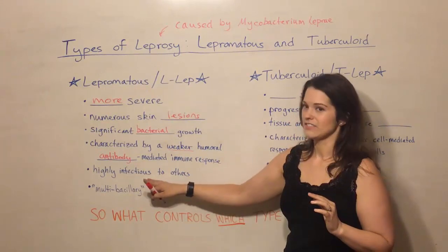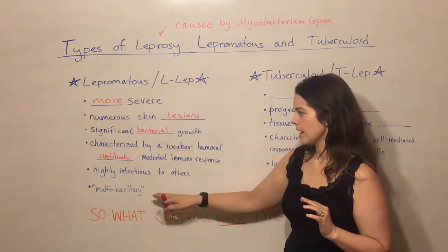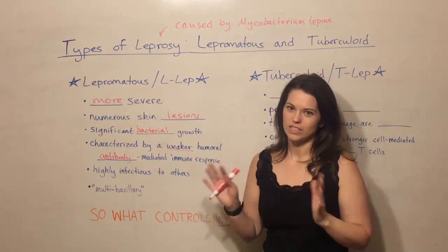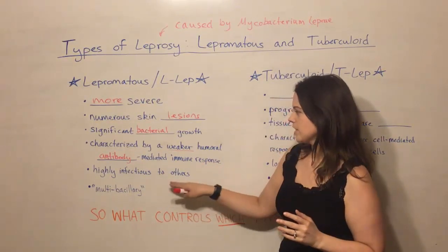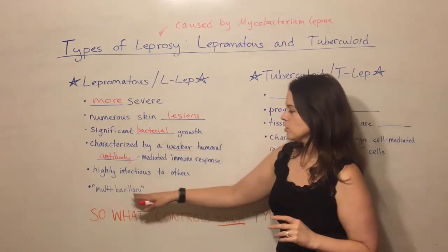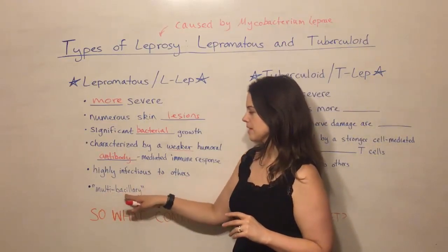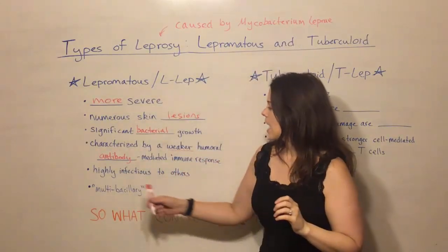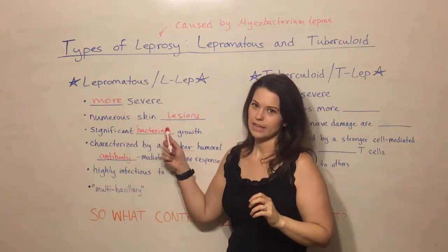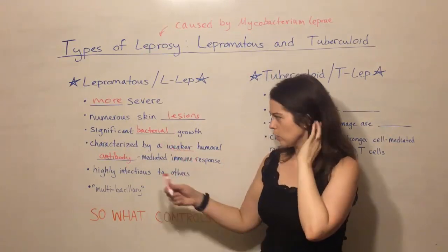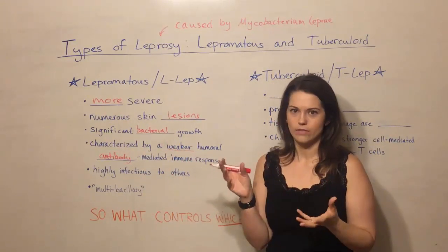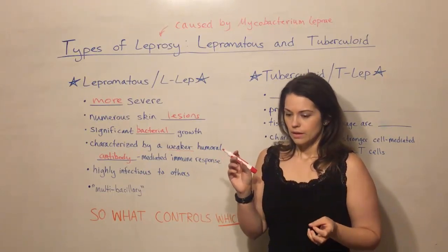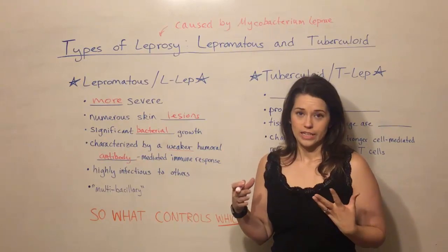L-LEP is also highly infectious to other people relative to the other kind. Leprosy overall is not actually that infectious, but this is the more infectious of the two. It's also sometimes called multi-bacillary — bacillary referring to bacillus, the rod shape of the mycobacterium, and multi meaning significant bacterial growth. There will be lots of the mycobacterium inside the macrophages, which are the cells where they replicate.